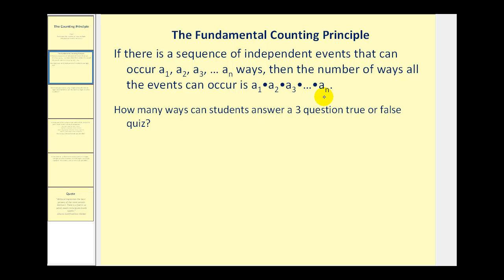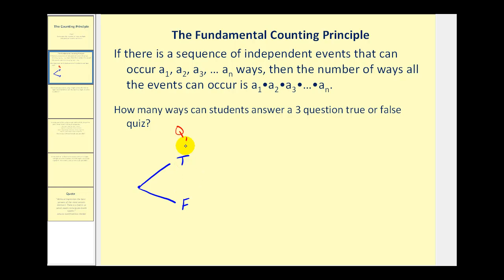We can use the counting principle to answer this question: how many ways can students answer a three-question true or false quiz? Before applying the counting principle, let's illustrate all possible ways using a tree diagram. For question one there are two choices — true or false. For question two there are also two options, true or false. Since there are two ways to answer the first question, if the first is true the second could be true or false.